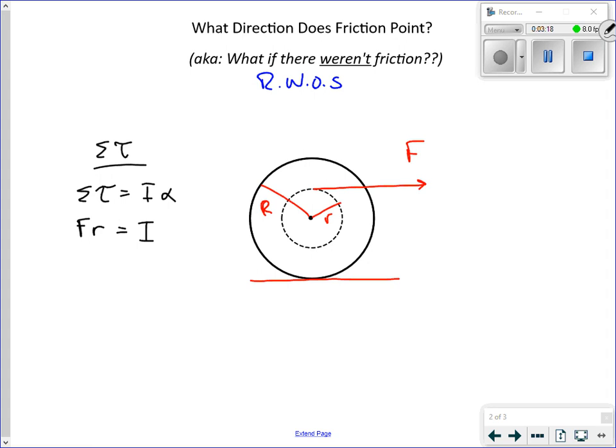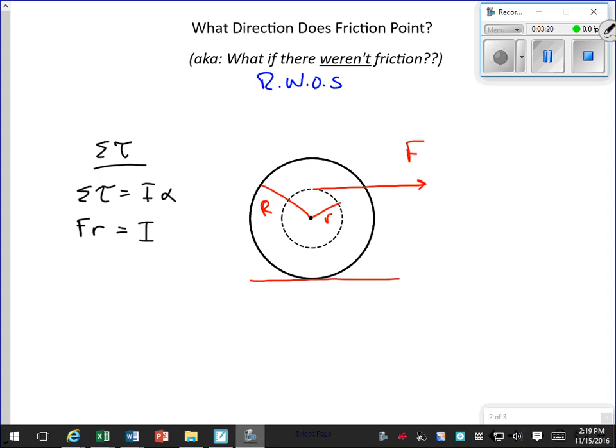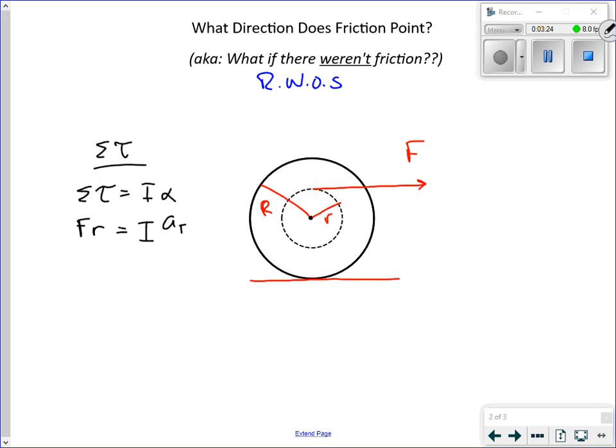Alpha. Remember, for rolling without slipping, we can say that there's an A tangential, and alpha is AT over R. AT is our alpha. That's our rolling without slipping criteria. Now, I, what's that going to be? I don't know. But what we get is we can say that there's some AT equal to FR over I. We could express this I. Well, that depends on what this shape is.